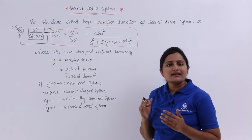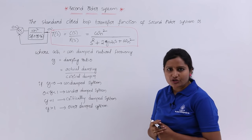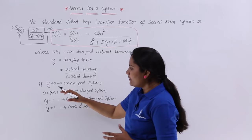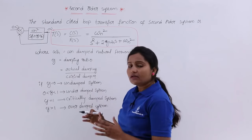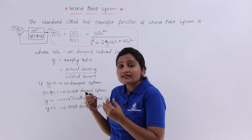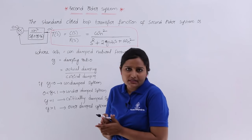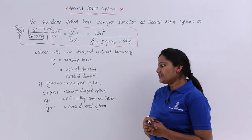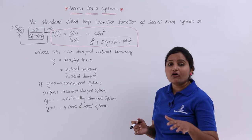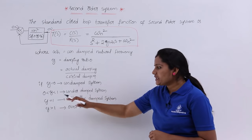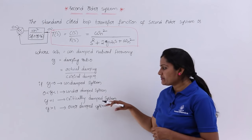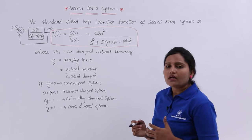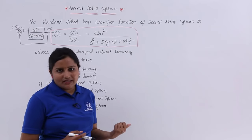Here omega_n is the undamped natural frequency and zeta is the damping ratio, which is actual damping divided by critical damping. If zeta equals 0, the system is called an undamped system. If 0 < zeta < 1, the system is an under-damped system. If zeta equals 1, the system is a critically damped system. And if zeta is greater than 1, that is an over-damped system.